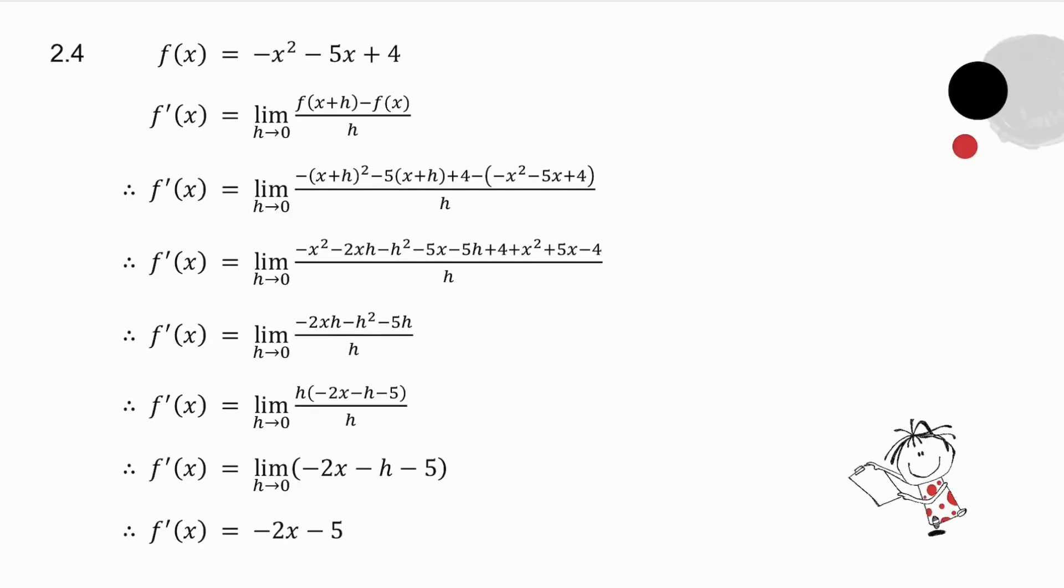In 2.4 I've given you f of x equals minus x squared minus 5x plus 4. So for f of x plus h, in place of every x, I put x plus h. So I get that. I then need to minus f of x, which is there. Multiply all the brackets out. Collect together like terms. Take out a common factor of h. The h's cancel. And now what I do is I make h tend to 0. Well if h tends to 0, what does this tend to? My limit is minus 2x minus 5.